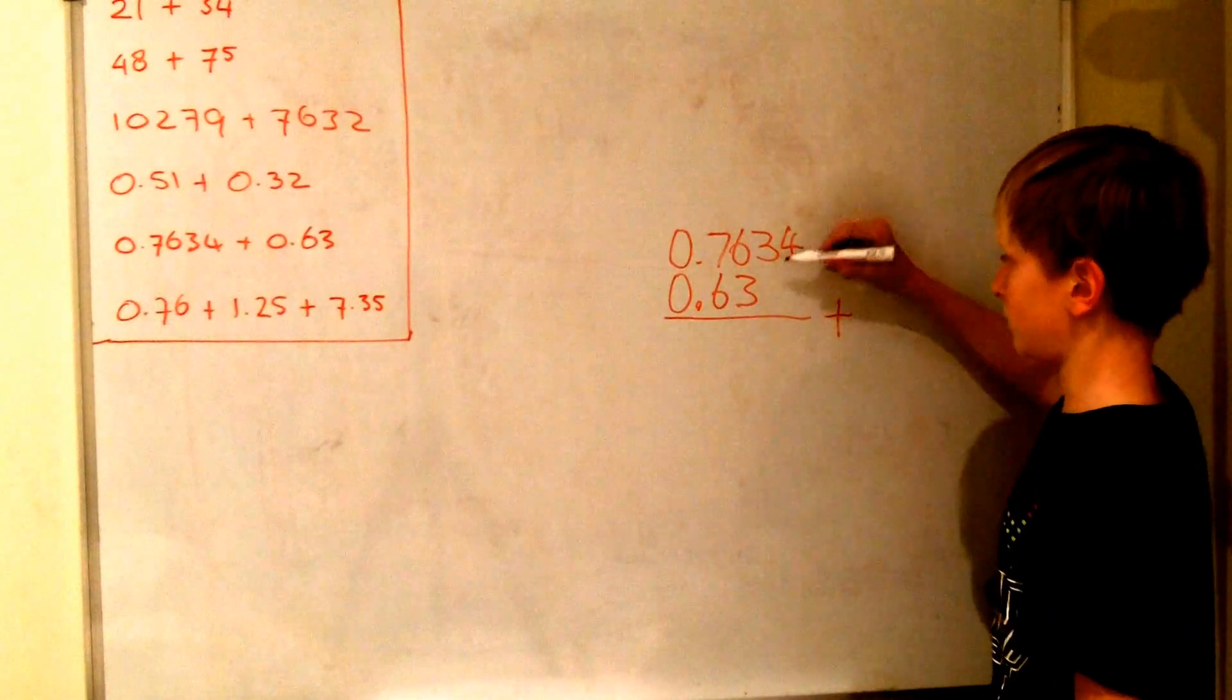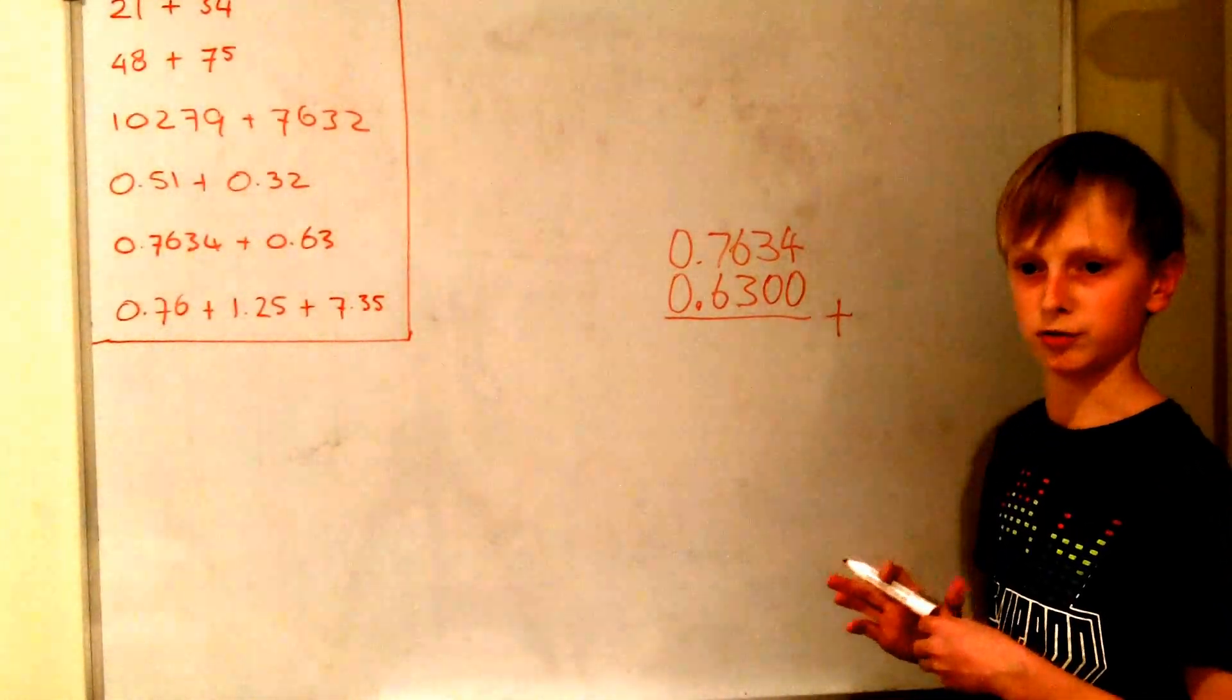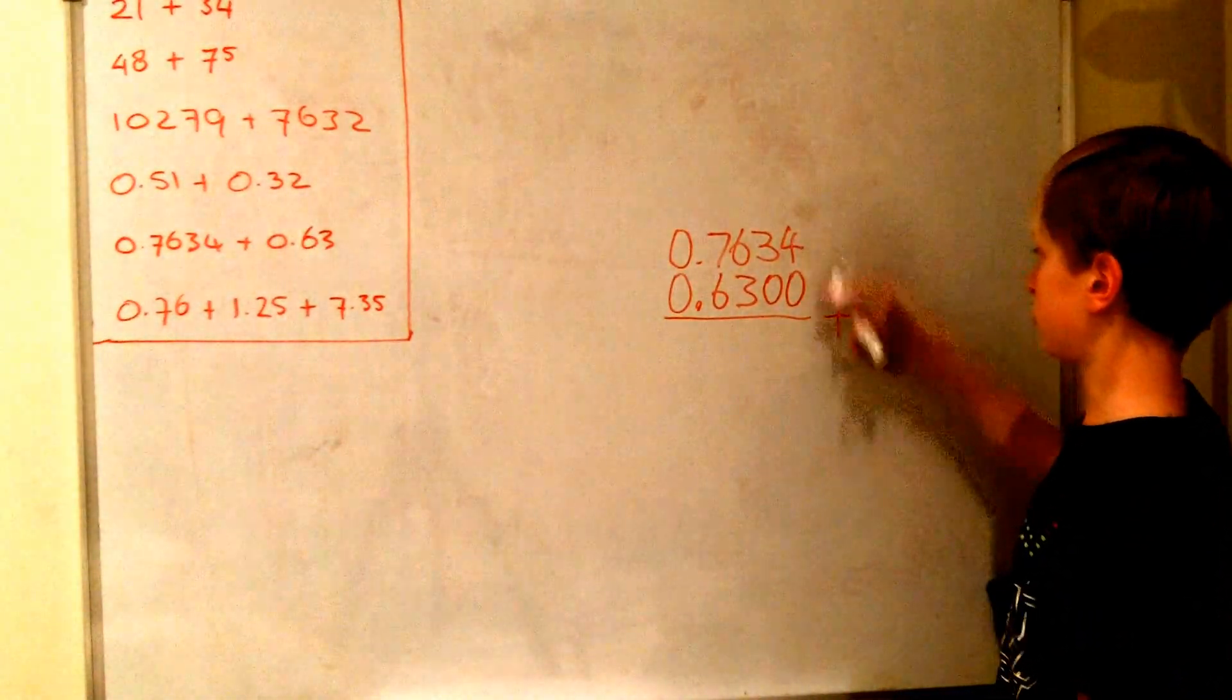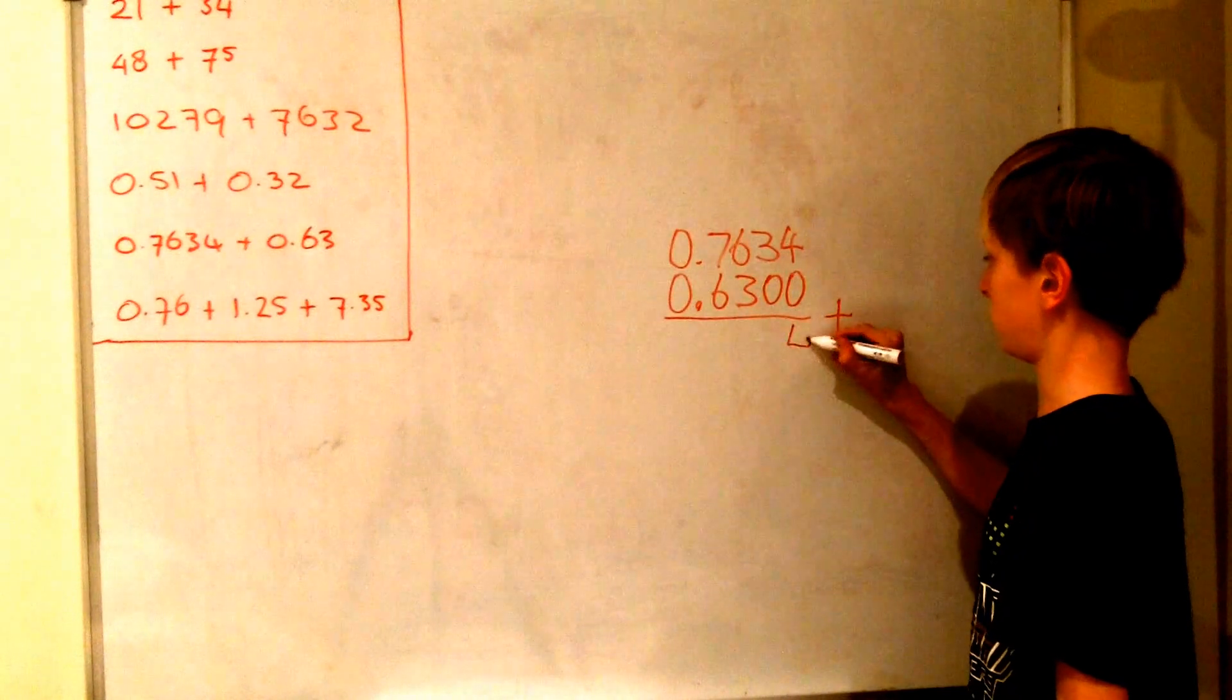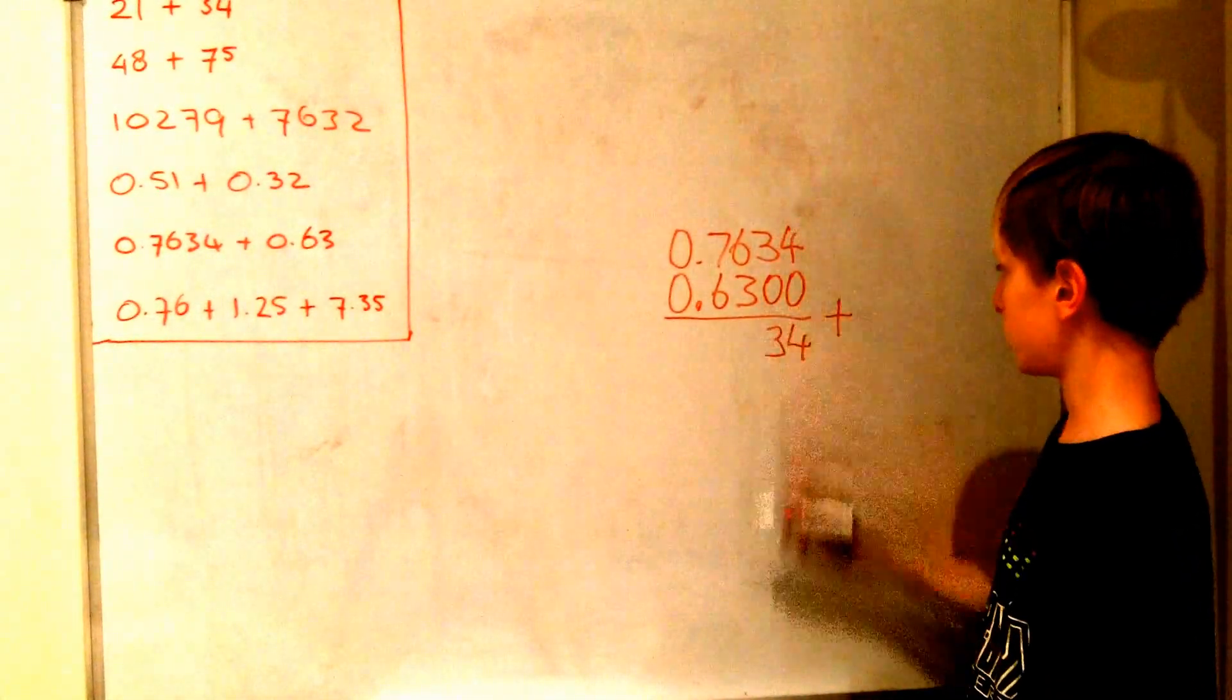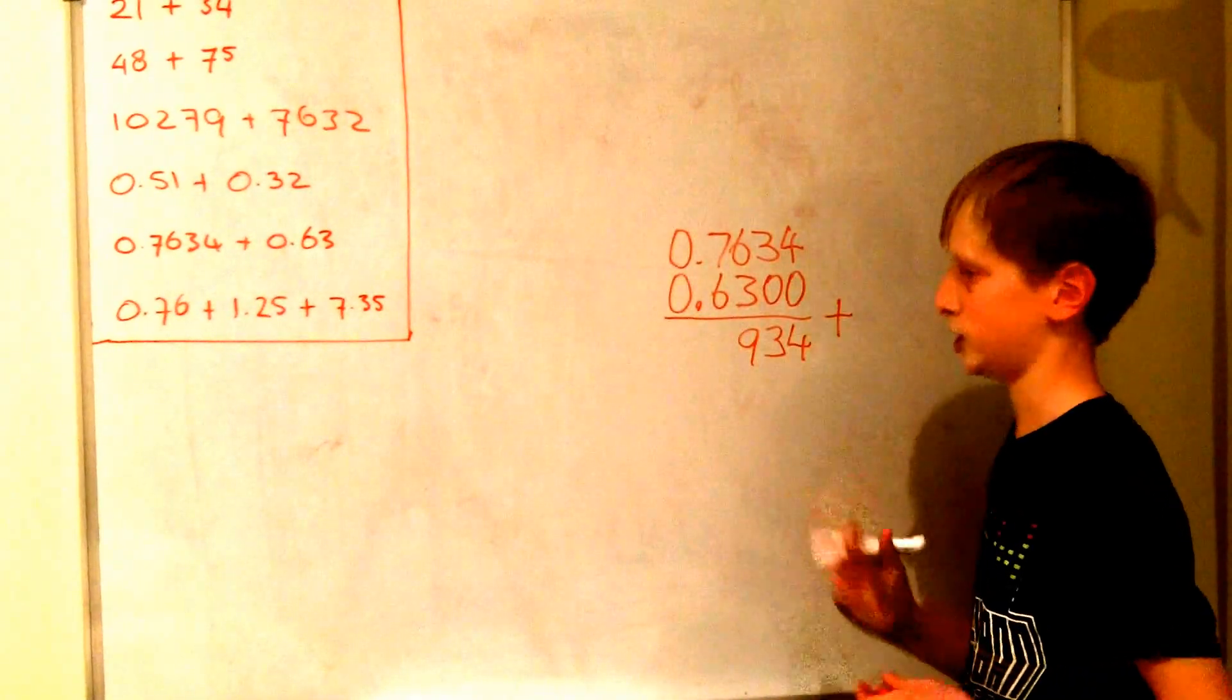So instead of doing that we can imagine zeros here. Because that is not going to make a difference. Because that is just exactly the same. So we add the 4 to the 0 which is 4. 3 to the 0 which is 3. 6 to 3 is 9. And 7 to 6 is 13.